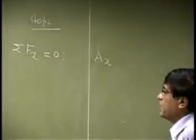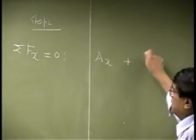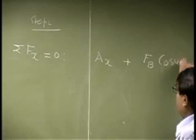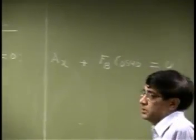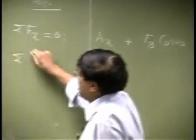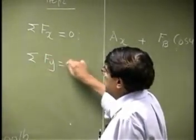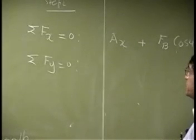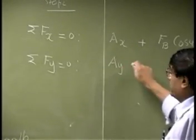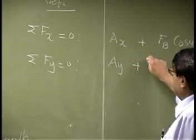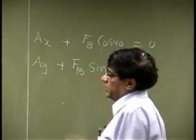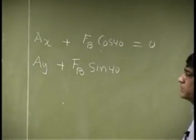So the x component will add up to this. That is force FB, and it will be cosine 40, and that will go to 0. Then you are going to have the sum of the force in y direction. That should also go to 0. You have AY at point A plus FB sine 40. That is the y component. It goes up.